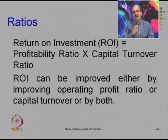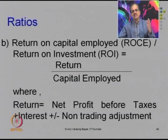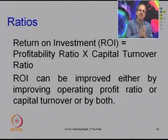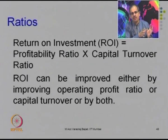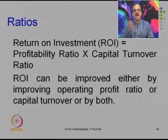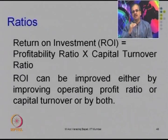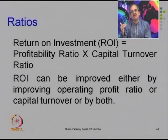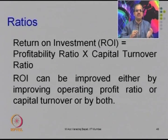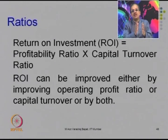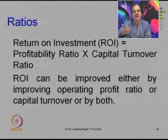There is another way to calculate ROI. ROI is return upon capital employed, and it can be broken down into two ratios: profitability ratio multiplied by capital turnover ratio gives ROI. This tells us that ROI can be improved in two ways: first, improve the operating profit margin earned on sales; second, improve capital turnover by generating more sales using the same resources. By doing both simultaneously, you can achieve a higher ROI.